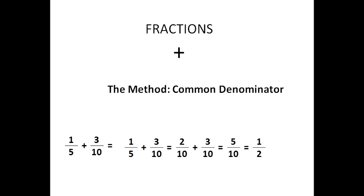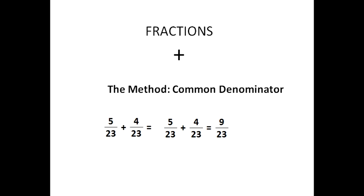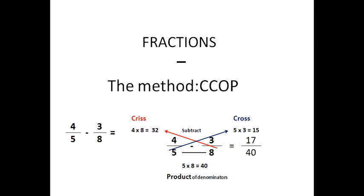Notice that five goes into ten two times, so our final answer is one-half. This method is used when one denominator times a whole number equals the other denominator. In this particular problem we have five over twenty-three plus four over twenty-three — five out of twenty-three plus four out of twenty-three — which altogether is nine over twenty-three. When the two denominators are the same, you don't have to do much. The method for subtraction of fractions is the same as for addition.